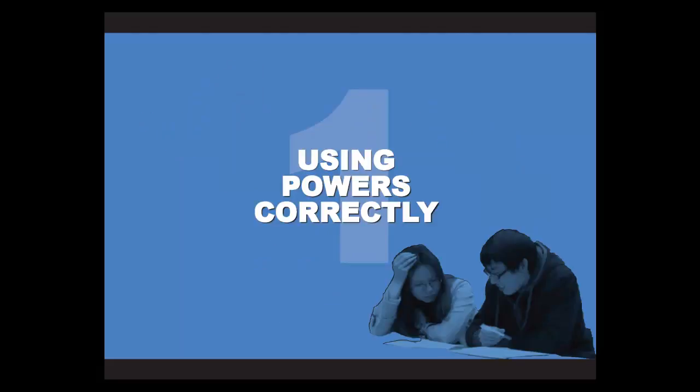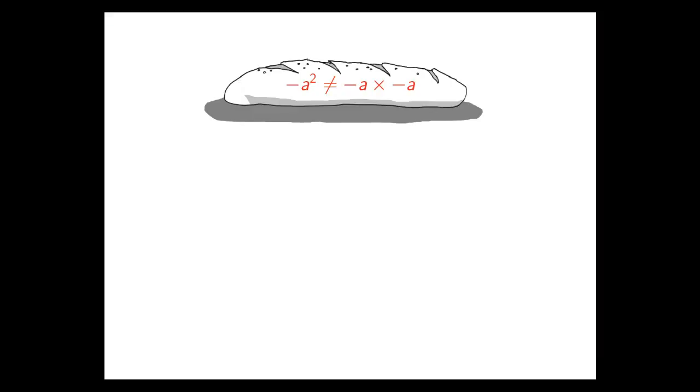Let's look at the first one concerning powers. A mistake I see fairly commonly when people are using algebra is this one. Minus a squared does not actually turn out to be minus a multiplied by itself. Now to see that, let's look at a situation that's similar using some simple numbers.